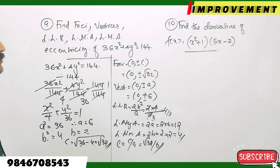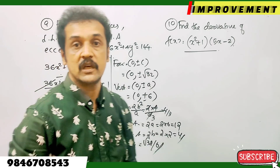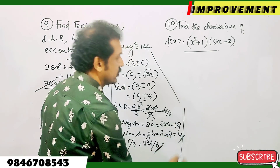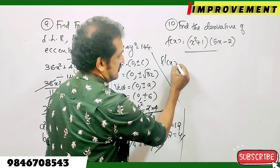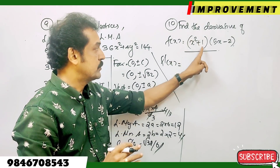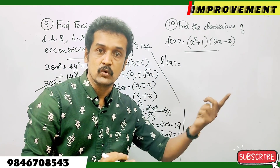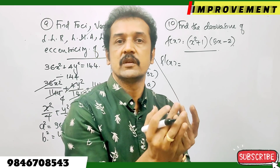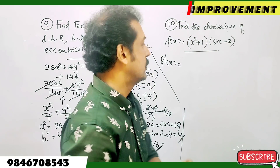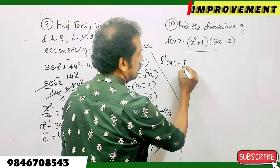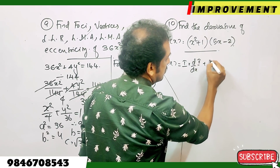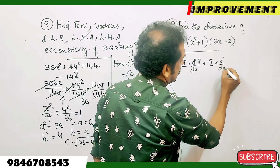Last question: find the derivative of f of x equals (x squared plus 1) times (5x minus 2). Using the product rule: first into d by dx of second, plus second into d by dx of first.